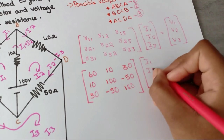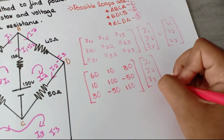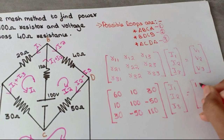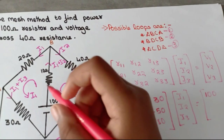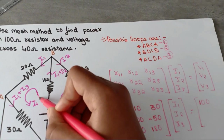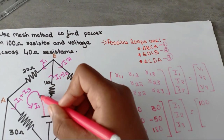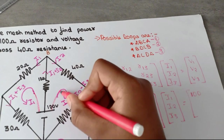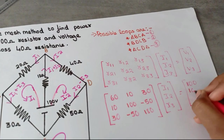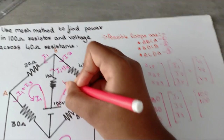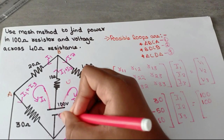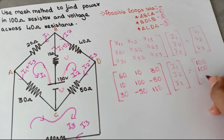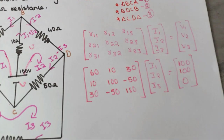Now the voltage column: for the first loop, the voltage source is 100 volts. The current starts from the positive terminal, so it's positive 100. For loop two, it also starts from the positive side of the voltage source, so that's also positive 100. If the current direction were reversed and started from the negative terminal, it would be minus 100. In the third loop there is no voltage source, so zero.